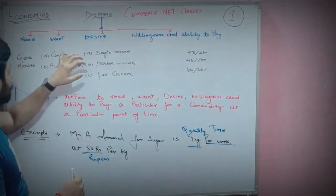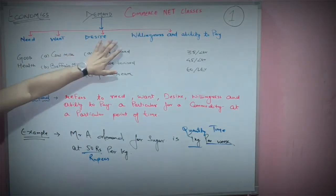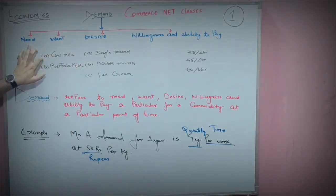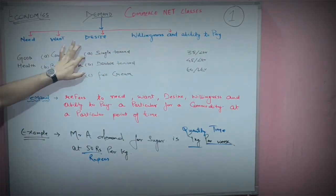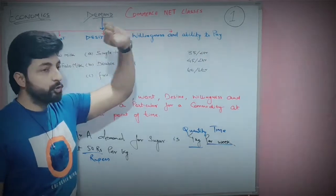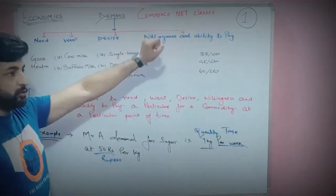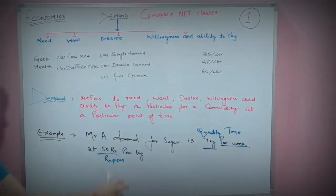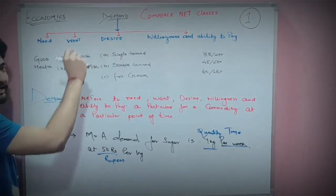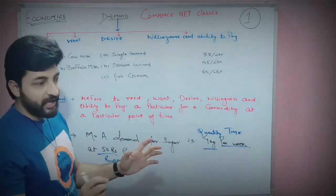So let's talk about the definition. What do we need? We need: need, want, desire, willingness, and ability to pay. First of all, this covers need, desire, and willingness to pay.